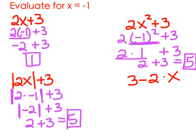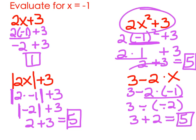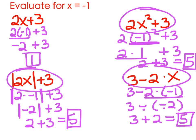And then 3 minus 2 times x. We plug in negative 1: 3 minus 2 times negative 1. PEMDAS says do the multiplication first - 2 times negative 1 is negative 2. Then a negative times a negative becomes a positive, so 3 plus 2, which is also 5. So this and this and this are all equivalent expressions when x equals negative 1.